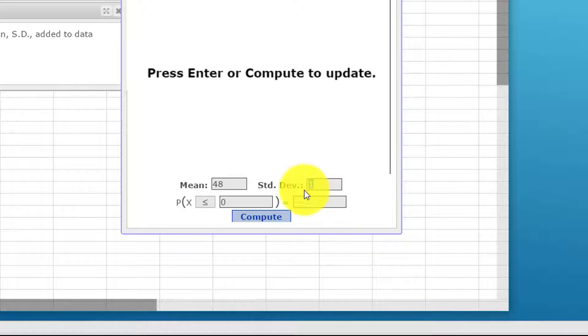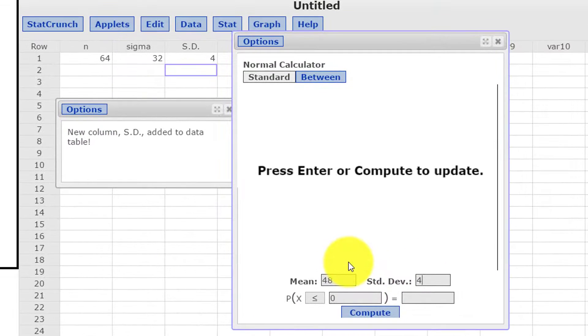and our standard deviation, which is 4. And so now we've converted the standard normal distribution so that we can work with our x values. We've got our mean of 48 and standard deviation of 4. The first question,